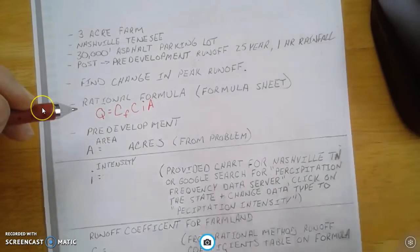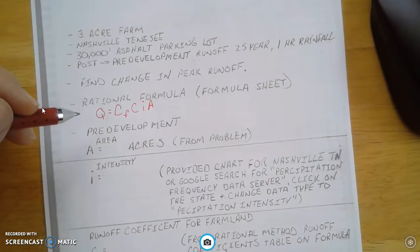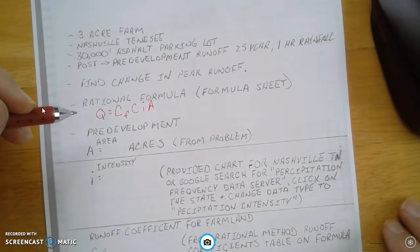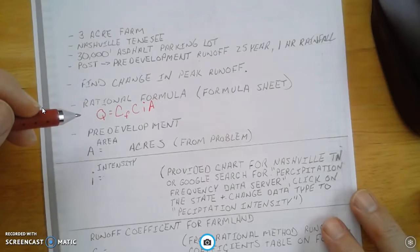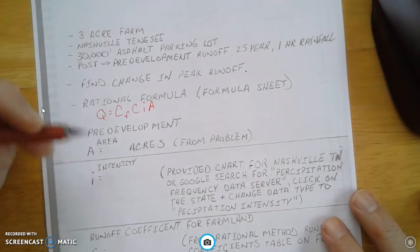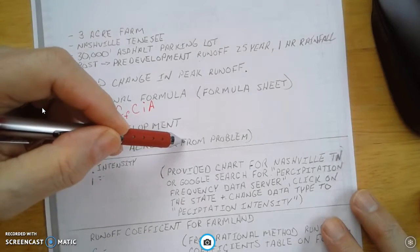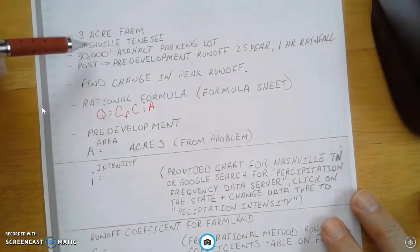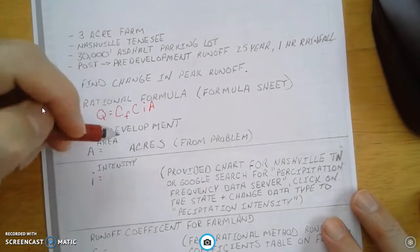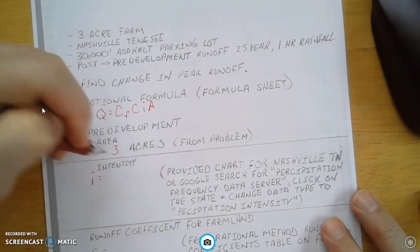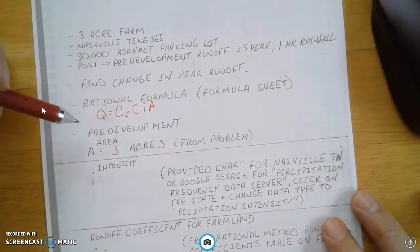So the first thing is the area. This is the pre-development part of the equations. The area is from our problem, and it's a three-acre farm. So we're going to just put in three acres.